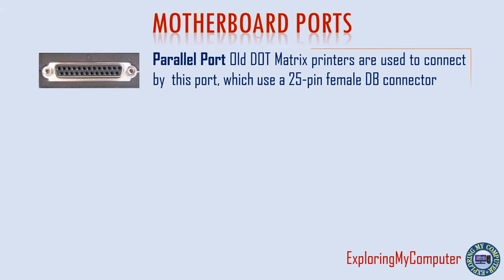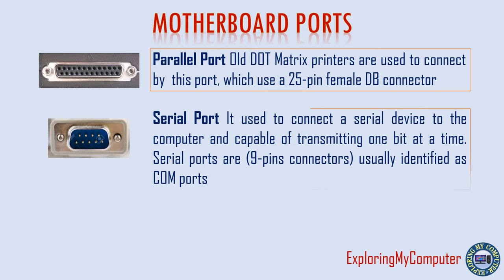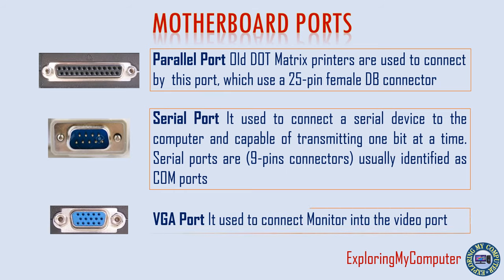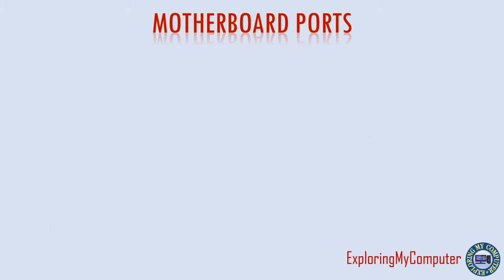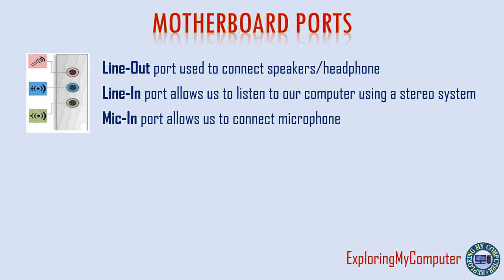Parallel connector: old printers are connected by a parallel port, which uses a 25-pin female DB connector. Serial connector is used to connect a serial device to the computer, capable of transmitting one bit at a time. Serial ports are 9-pin connectors, usually identified as COM ports. VGA (Video Graphics Adapter) is used to connect a monitor into the video port. Line-out is used to connect speakers or headphones into the line-out jack.